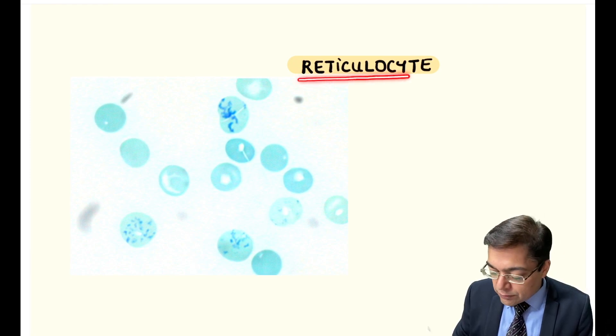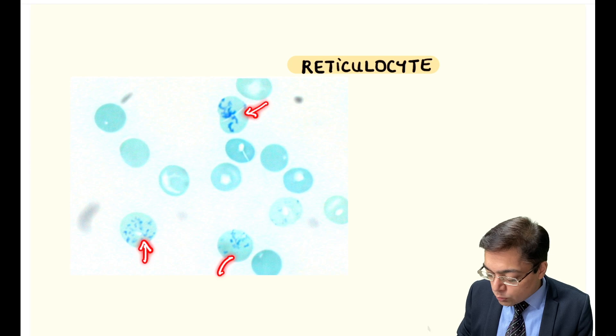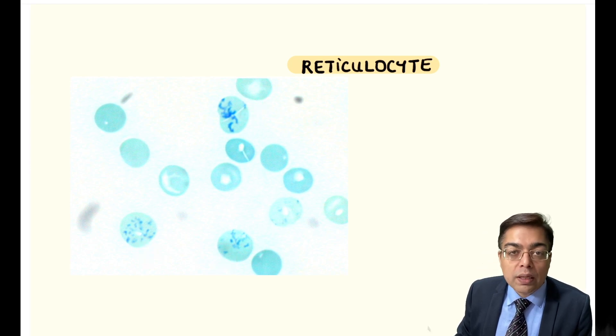We are talking about a cell that is given the name reticulocyte. The cell has the presence of a meshwork-like pattern, and that's the reason why you are calling it reticulocyte. A reticuline-like or meshwork-like pattern is what is seen in this cell.